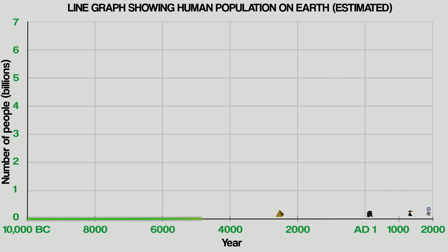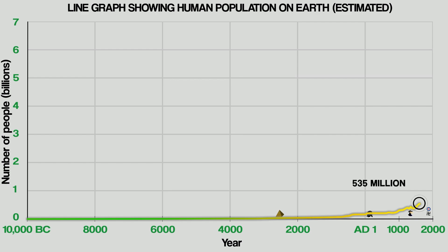Population growth does speed up a little bit after that, reaching about 170 million by the year 1 AD. By the time we get to the year 1000, there are 254 million people. By 1500, there are 425 million people. 1600 sees the population reach 535 million, and by 1700 there are 600 million people.